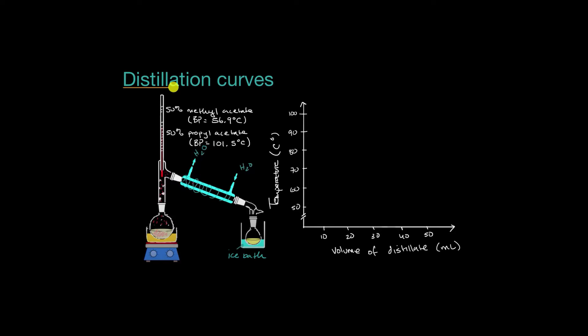Let's say we're trying to distill roughly 50 milliliters that is 50% methyl acetate and 50% propyl acetate. What's interesting is the difference in their boiling points — the boiling point of methyl acetate is 56.9 degrees Celsius, while the boiling point of propyl acetate is a lot higher, 101.5 degrees Celsius. You can imagine, with this fractional distillation setup, we're going to be able to separate these quite readily because of those differences in boiling point.